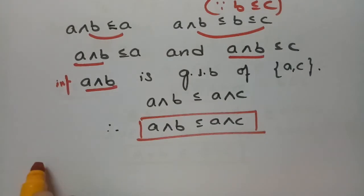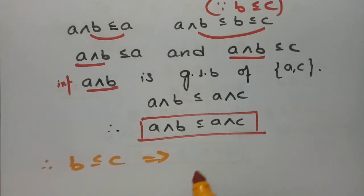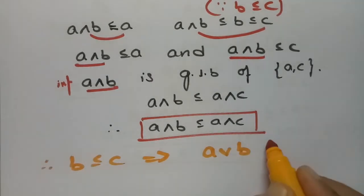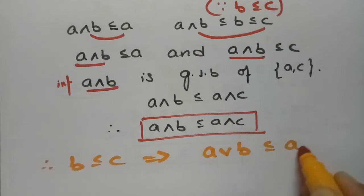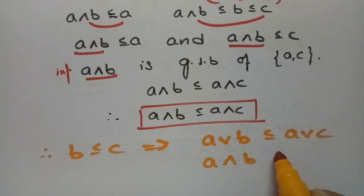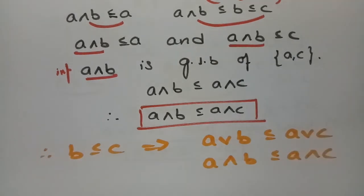Therefore, B less than or equal to C implies A join B less than or equal to A join C, and A meet B less than or equal to A meet C. We have shown both proofs.